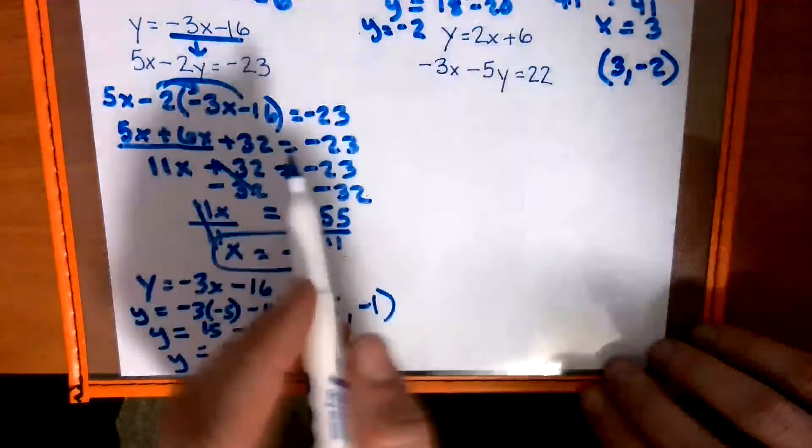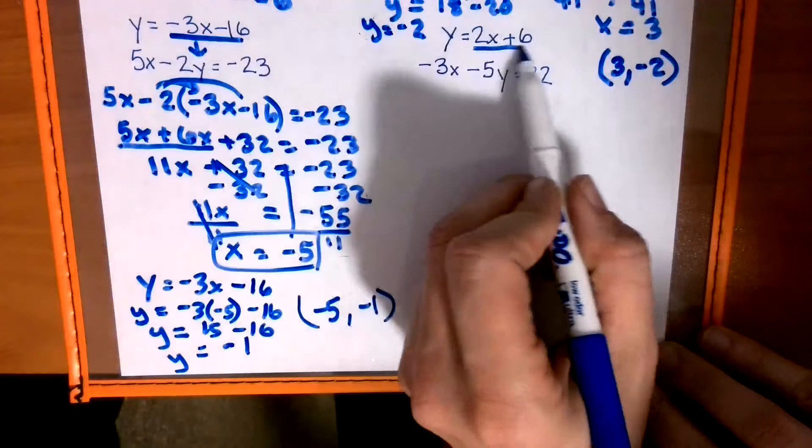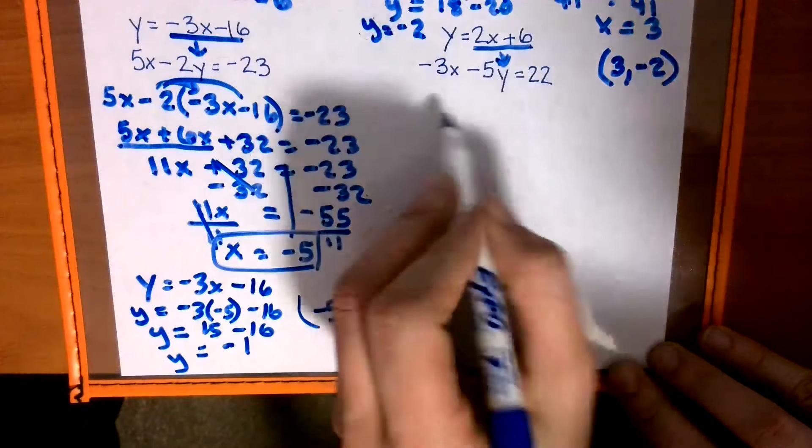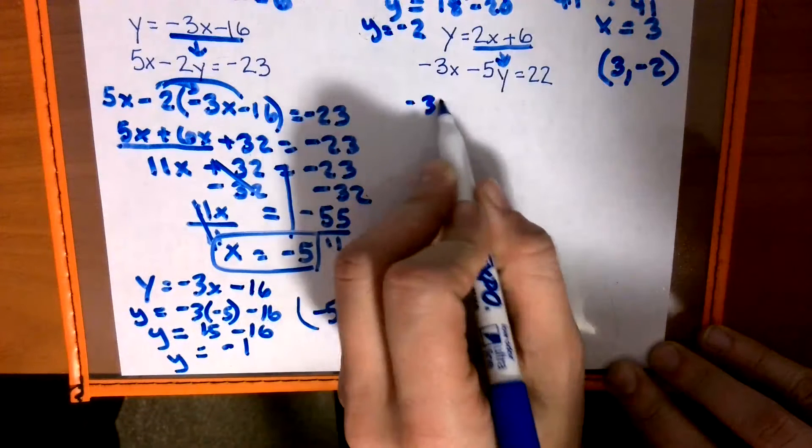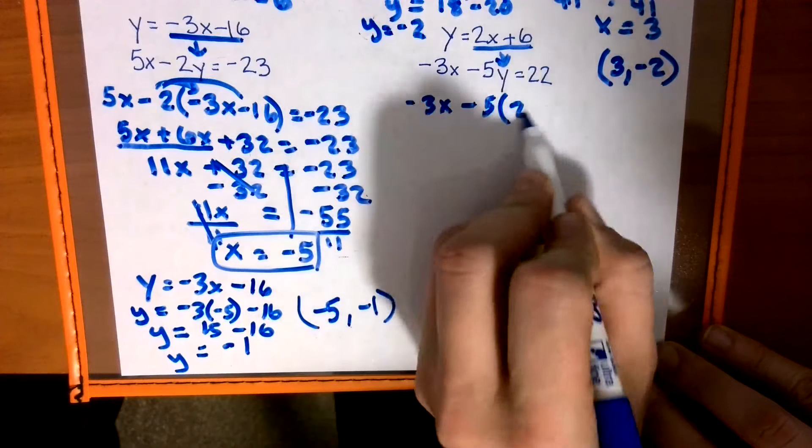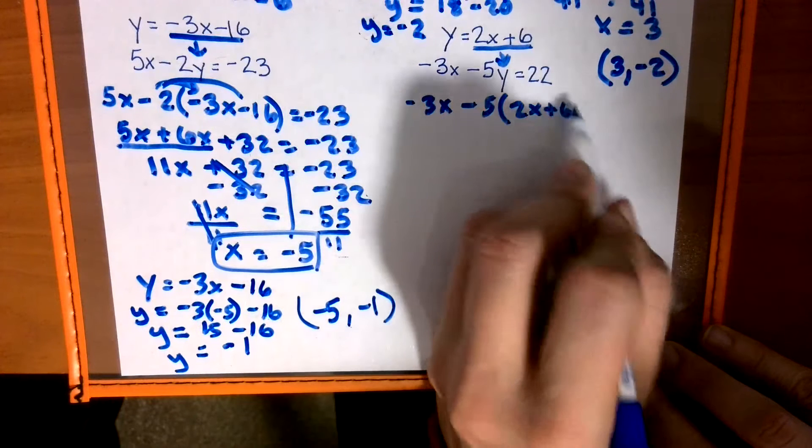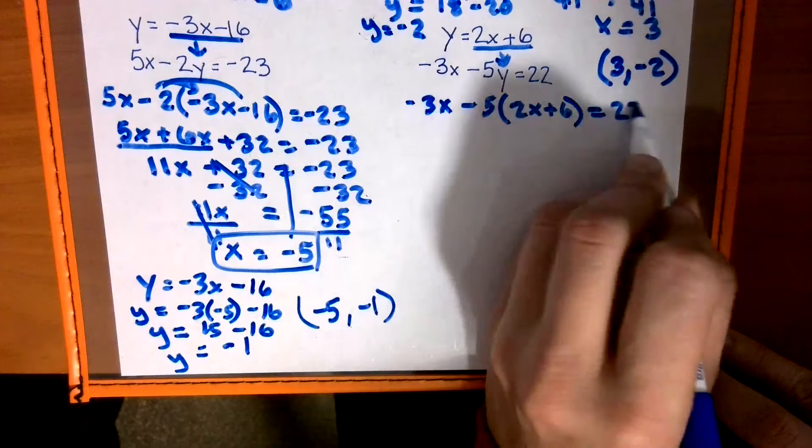Last one. Here we go. I plug this in for this. Negative 3x minus 5, parentheses 2x plus 6. Close it. Equals 22.